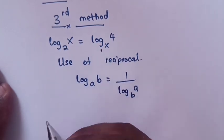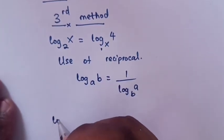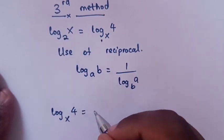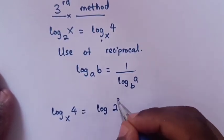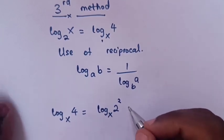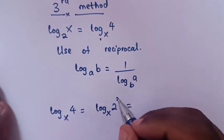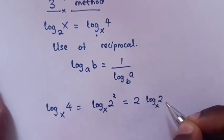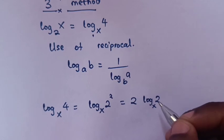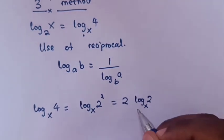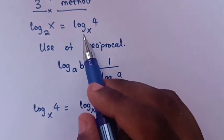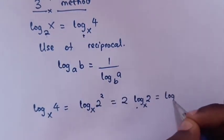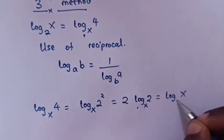Applying this to log 4 base x: log 4 base x equals log 2 squared base x, which equals 2 log 2 base x. Using the reciprocal rule, log 2 base x equals 1 over log x base 2. So log 4 base x becomes 2 over log x base 2.